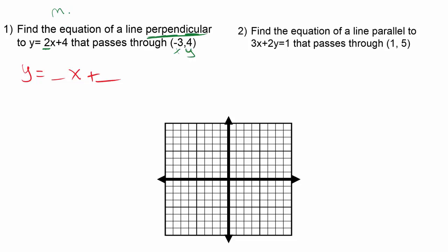We know that any line perpendicular to y equals 2x plus 4, since our slope is 2, the slope of any line perpendicular to that should be the opposite reciprocal, meaning I flip over 2 over 1, make it 1 half, and it's positive, so we'll change the sign to negative, so negative 1 half.